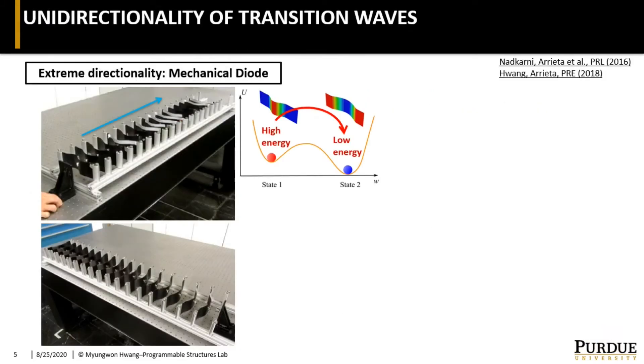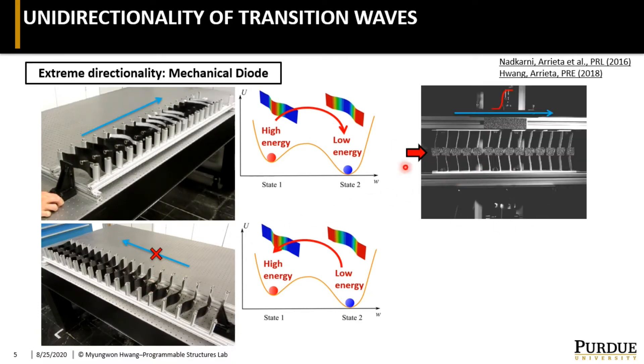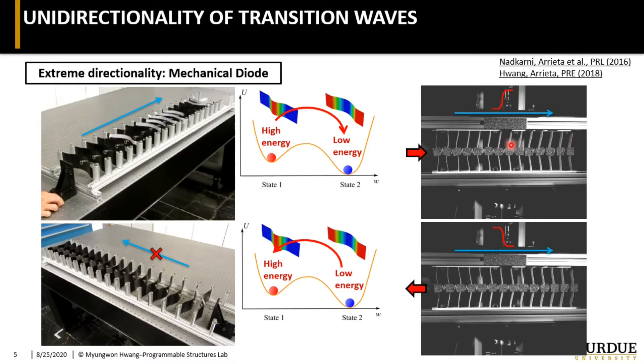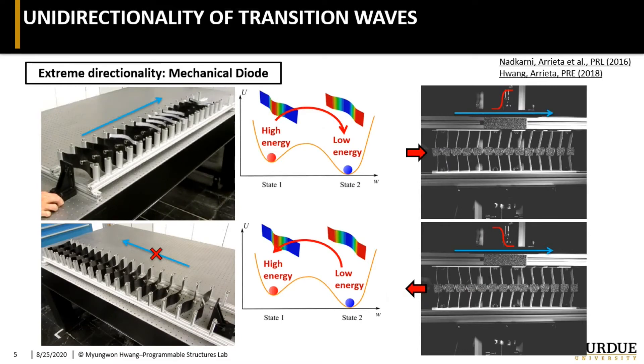In our previous work, we have demonstrated unidirectional wave propagation in bistable lattices using asymmetric on-site potential. This is one such lattice with magnetic interaction, and it shows a transition wave propagating all the way through the lattice in one direction, but not in the other direction. Here is another one made with elastic interaction. The transition wave still propagates in one direction only, but it now can trigger in both directions, supporting both compression type and rarefaction type of transition waves.